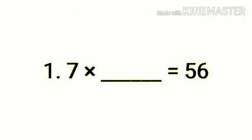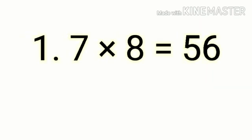Question number 1: 7 into dash is equal to 56. For this sum, what you have to do? You have to recall the table of 7. So 7 eights are 56.